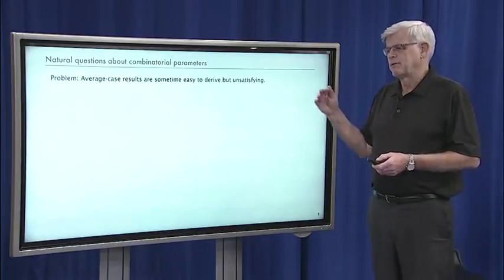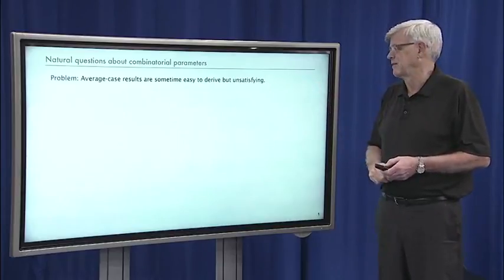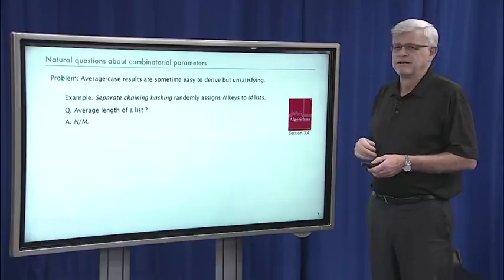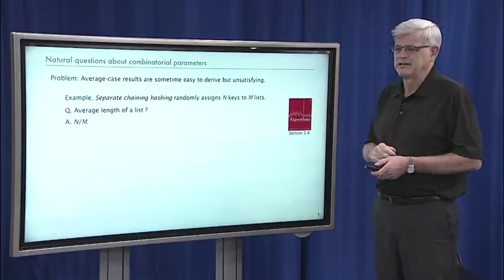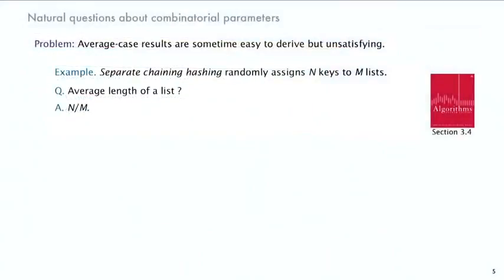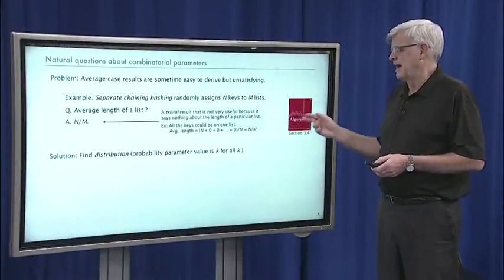One problem with this point of view is that sometimes it's easy to get average case results, but they're a little bit unsatisfying. A famous example is an algorithm called separate chaining hashing. Basically it randomly assigns n keys to m lists, and you want to know the average length of a list — it's n over m. But that's a trivial result, and it's not that useful because it doesn't say anything about the length of a particular list. For example, all the keys could be on one list, which would be something we wouldn't want for performance.